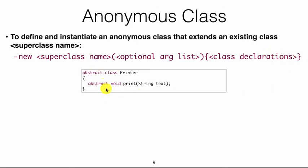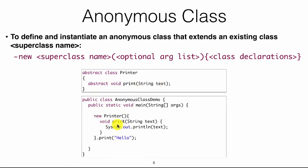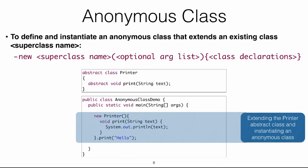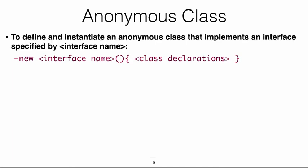To define and instantiate an anonymous class that extends an existing class, you write new, then the superclass name, then an optional parameter list, and then declare the methods inline. For example, if you have an abstract class called Printer with one abstract method, inside main you can say new Printer and implement the print method right there, and even call it immediately.